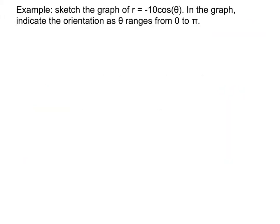I have one example here for us. I want us to sketch the graph of r equals negative 10 cosine theta. And in the graph, I want to indicate the orientation as theta ranges from 0 to pi. This should be an easy thing for you to do based on the last slide. So go ahead and sketch this graph.